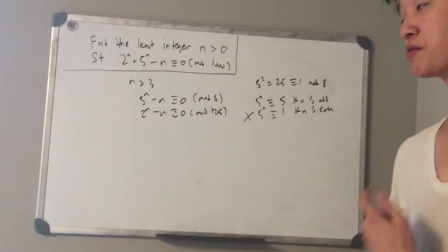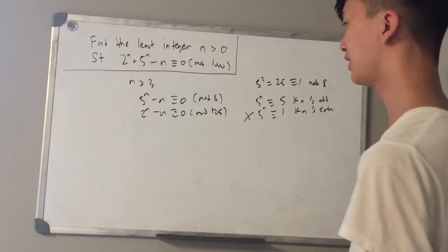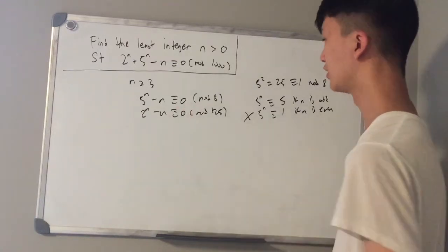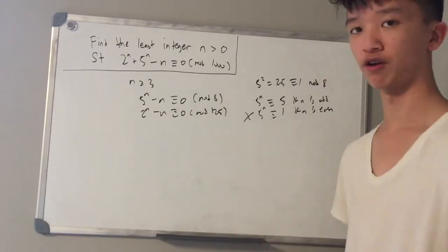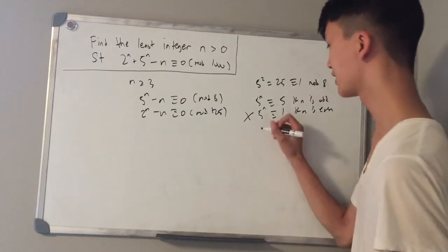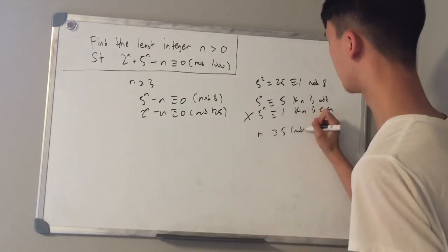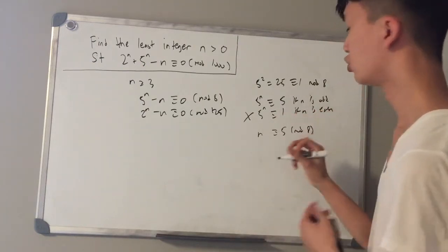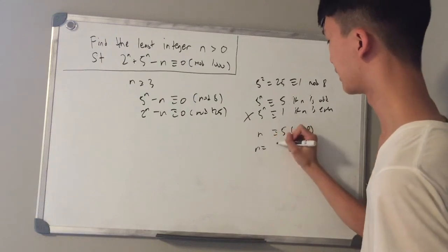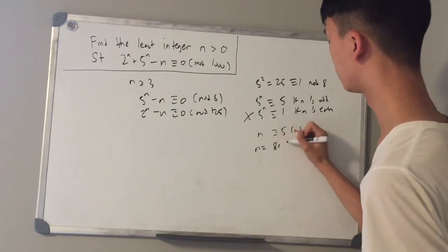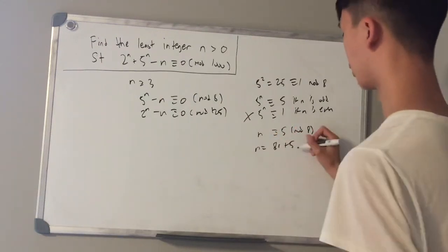Therefore n is odd. Since it must be congruent to 0 mod 8, it becomes clear that n is congruent to 5 mod 8, since 5 minus 5 is equal to 0. We can therefore write n as 8r plus 5 for some natural number r.